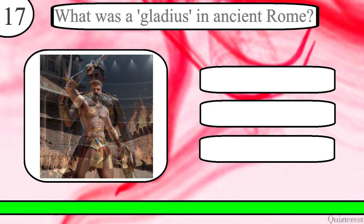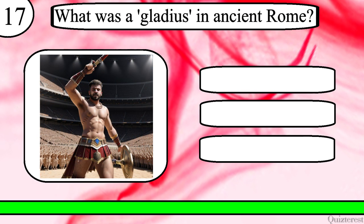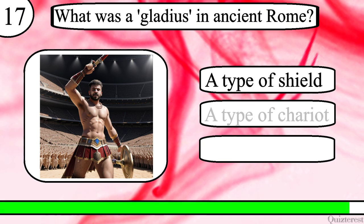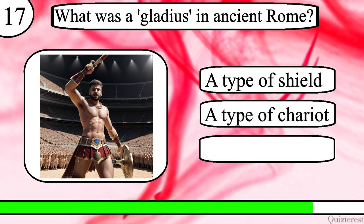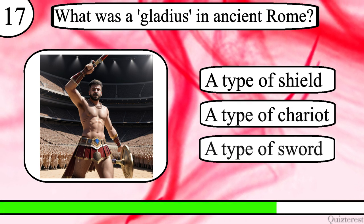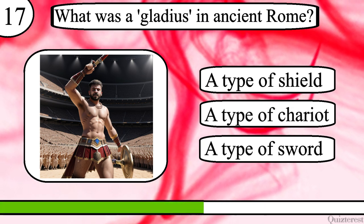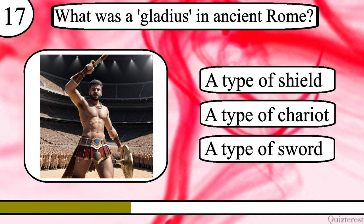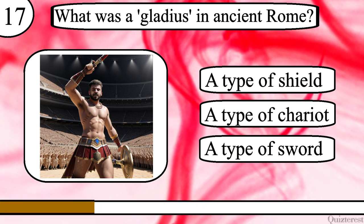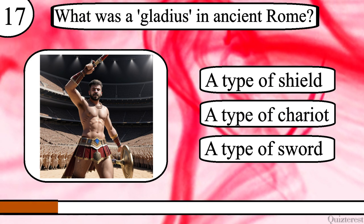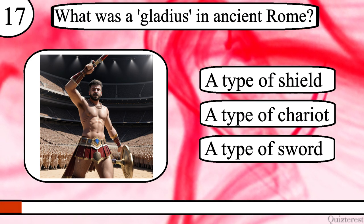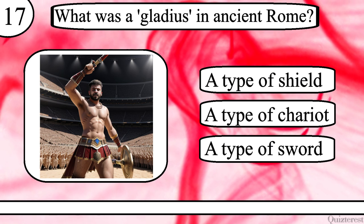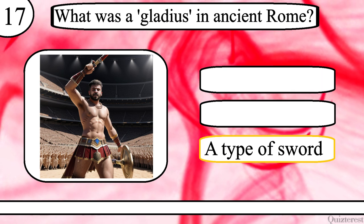Question 17. What was a gladius in ancient Rome? A type of shield, a type of chariot or a type of sword? The correct answer is a type of sword.